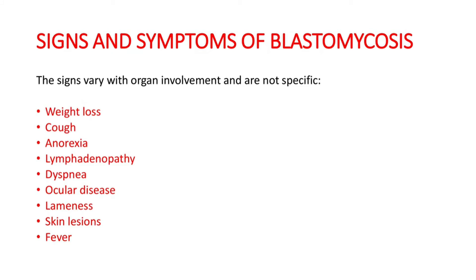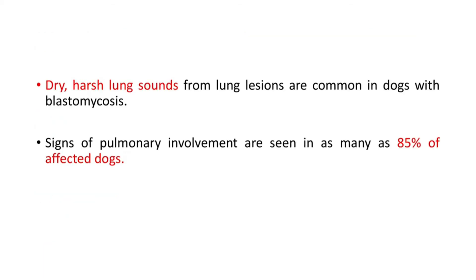Coming to the signs and symptoms of blastomycosis - signs vary with the organ involved and are not specific, including weight loss, cough, anorexia, lymphadenopathy, dyspnea, ocular disease, lameness, skin lesions, and fever. Dry, harsh lung sounds from lung lesions are common in dogs with blastomycosis, and signs of pulmonary involvement are seen in as many as 85% of affected dogs.